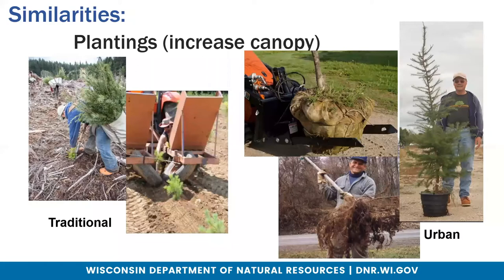Comparing urban forestry to traditional forestry: we both do tree plantings and we're both trying to increase tree canopy. In traditional forestry, they tend to use seedlings planted by hand or with mechanical planters. In urban forestry, we plant much bigger stock. Imagine if a street department planted seedlings — we would mow those over. We plant larger trees because we don't want to mow them over, and we also get quicker canopy and better survival rates. You can see bare root trees, ball-and-burlap trees, and containerized trees — the kind most homeowners are familiar with.